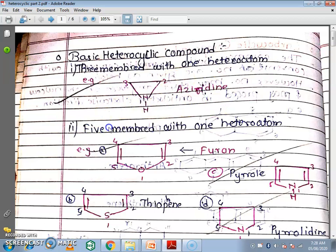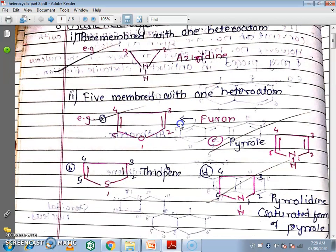The second category is 5-membered ring with 1 heteroatom. The first compound is furan, which contains oxygen as the heteroatom. The numbering starts from the heteroatom: 1, 2, 3, 4, 5. This is the compound furan. Next is thiophene, which contains sulphur as the heteroatom. The numbering starts from the heteroatom: 1, 2, 3, 4, 5.